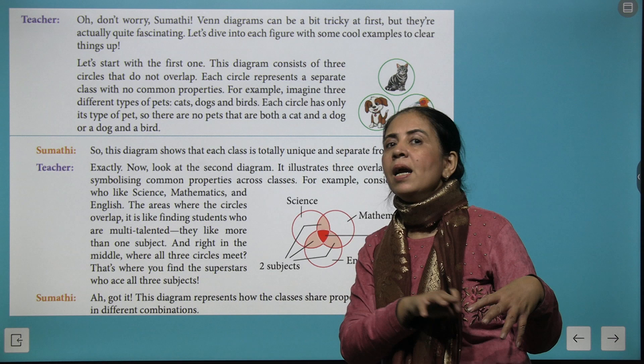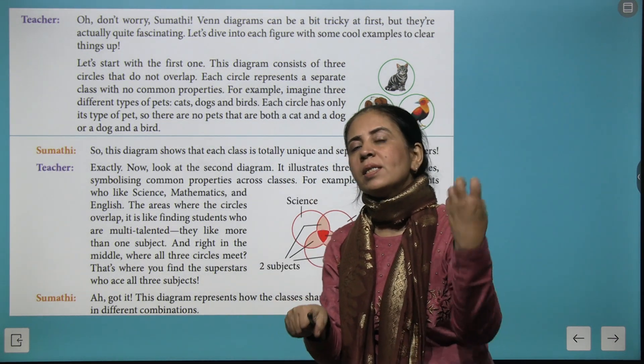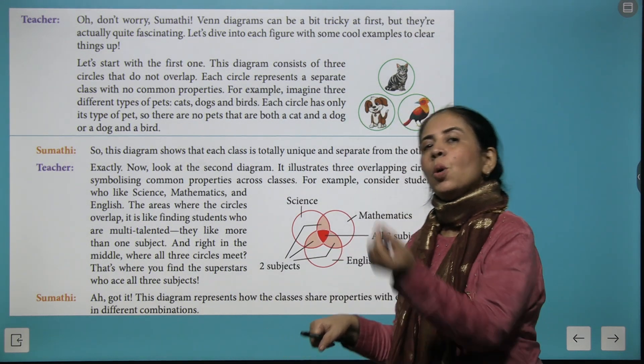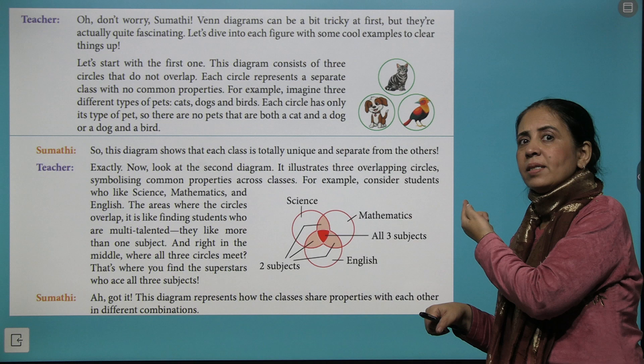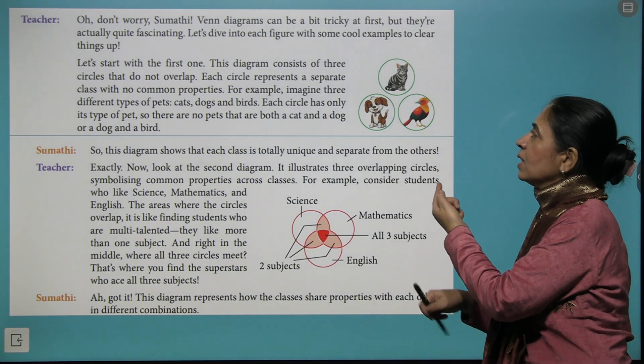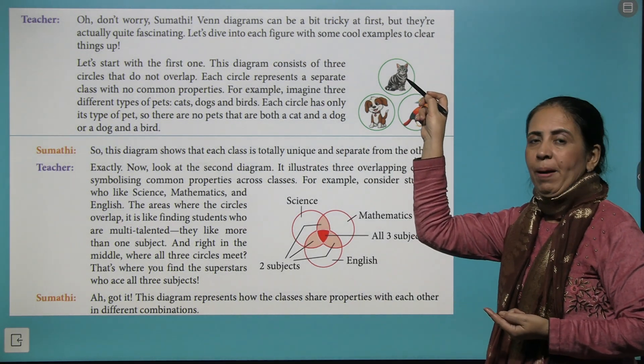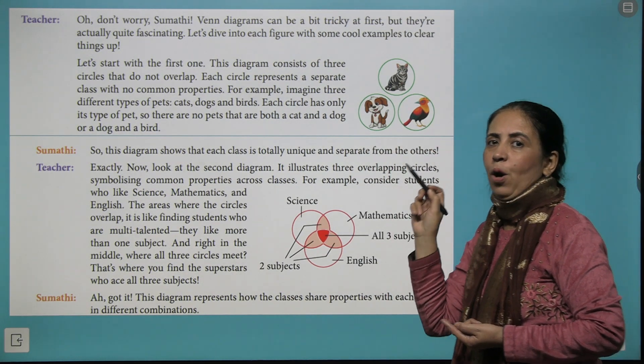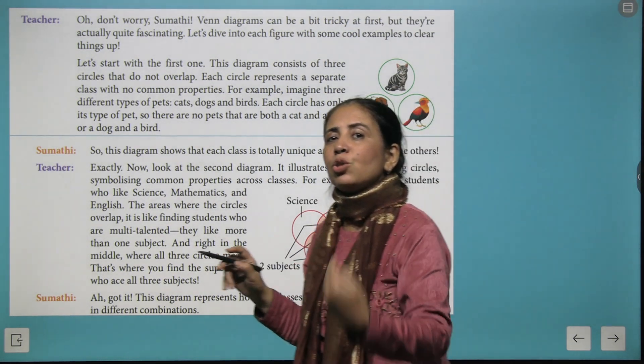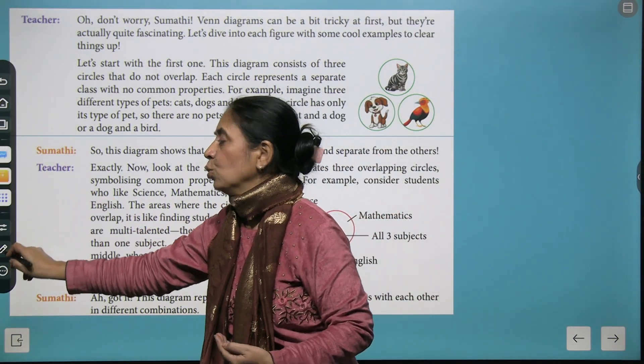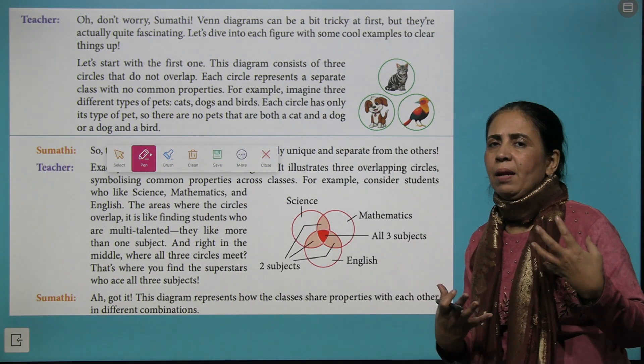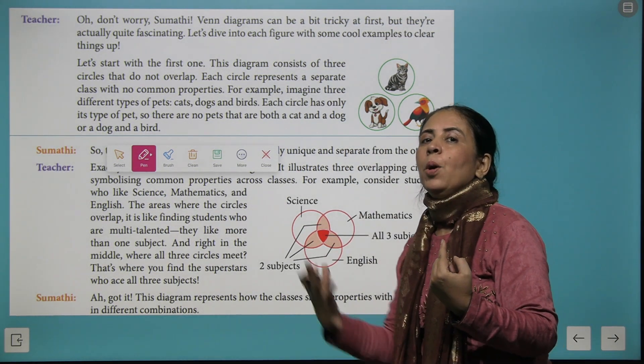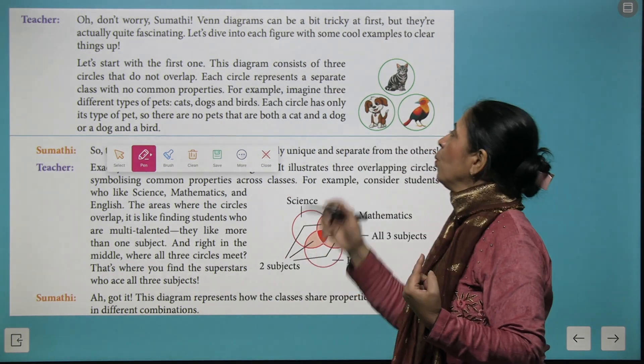We have taken the first example. In this example we have three circles - one has the family of cats, another has a family of dogs, and the third one has a family of birds. Now cats, dogs, and birds belong to three different families and nothing can be common in them. That means there cannot be any cat which is a dog or a bird, so we have three circles which are placed entirely different.